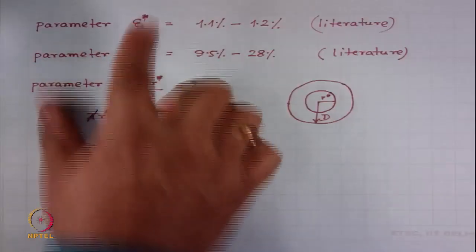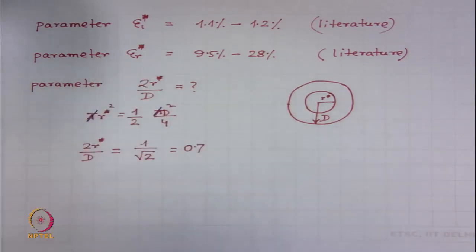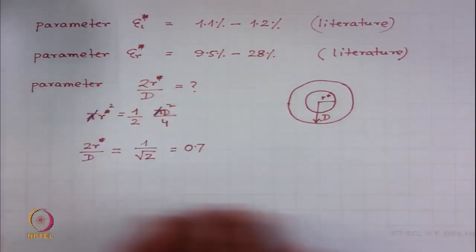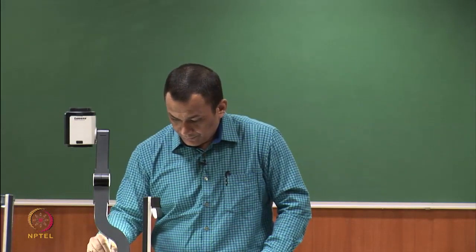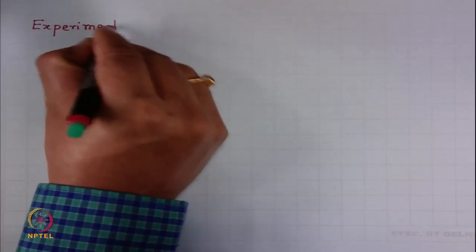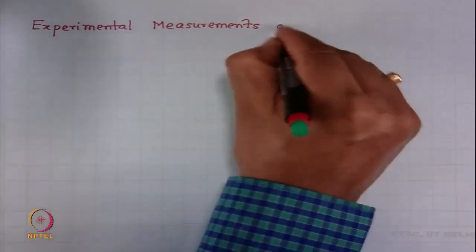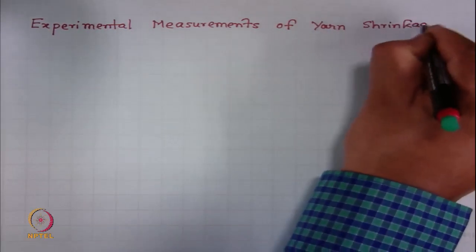These three parameters: epsilon_L* remains relatively constant, while epsilon_R* is a function of the number of cycles of washing and drying. Initially this value will be less; as washing and drying continues this value increases, probably reaching a plateau after a certain number of cycles. Now we would like to go for experimental measurement of shrinkage.